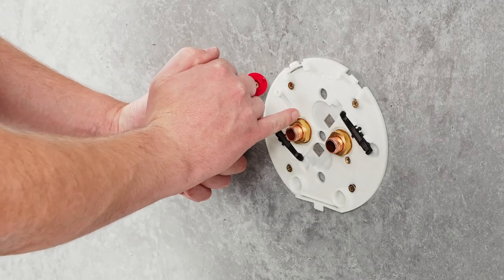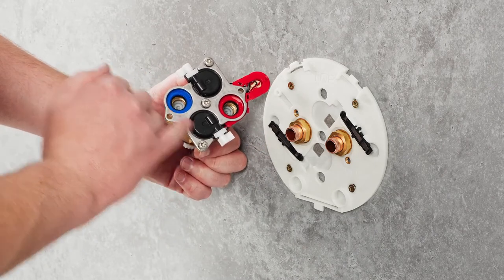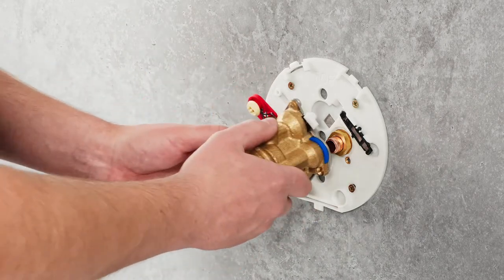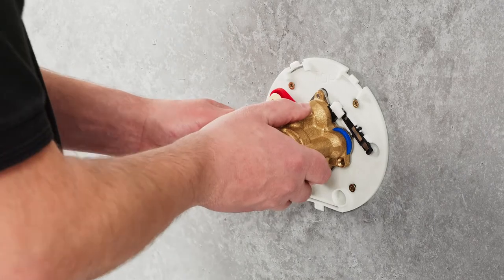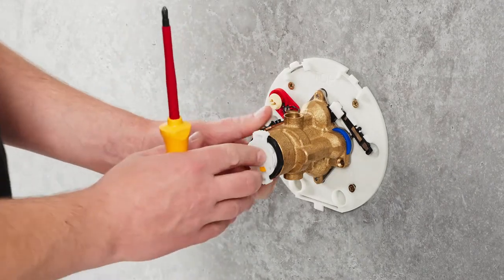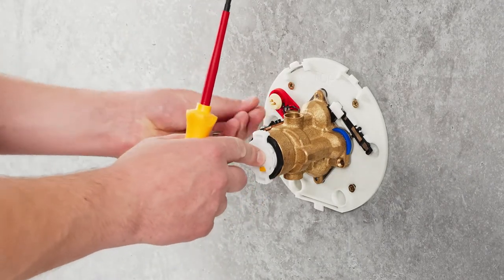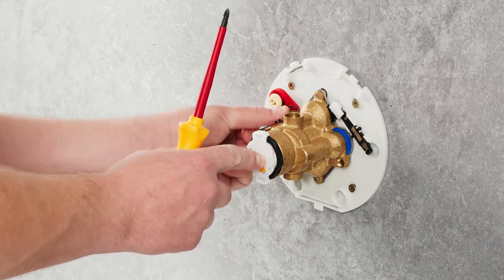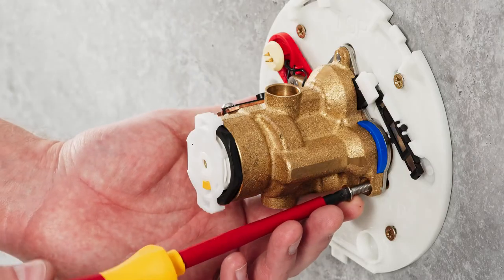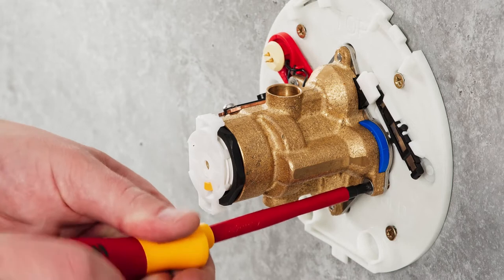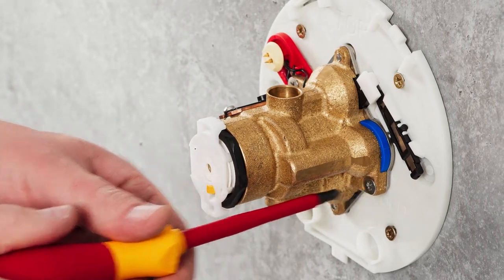The mixing valve can then be located into place by sliding the valve onto the supplies. Hot and cold indicators on the valve indicate the correct orientation to be matched with those on the backplate. The valve can then be secured into place using the two retainer bolts supplied. These need only be hand tight without the need for power tools.